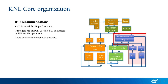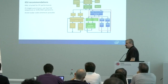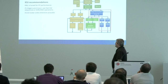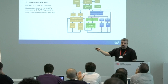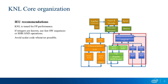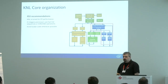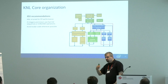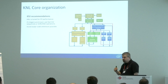Recommendations: the Knight's Landing processor is a floating-point device — the architects really tuned it for floating-point performance. If you have an integer workload, be aware that integer instructions will probably not give you optimal performance. Use simple instructions — shifts, AND, OR — as much as possible, and try to avoid scalar code whenever possible. Don't try to run an integer-only workload on KNL.